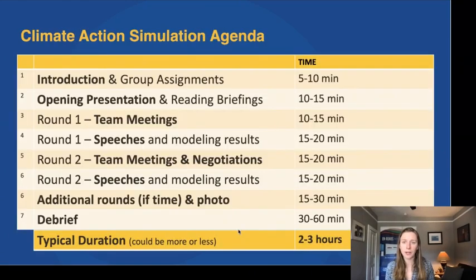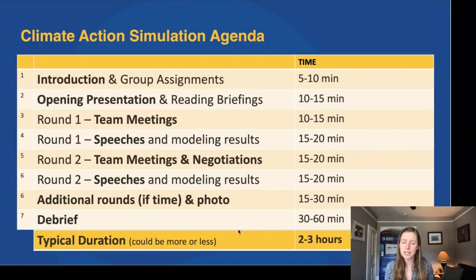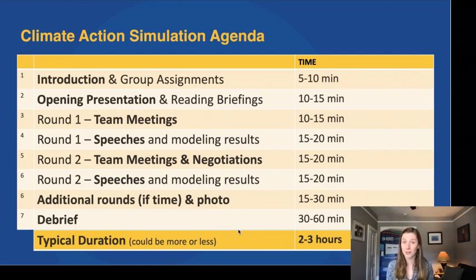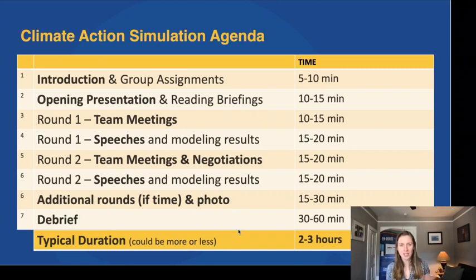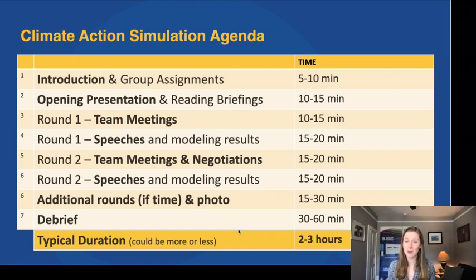Let me give you a quick overview of the agenda for a typical Climate Action Simulation. The event generally runs two to three hours, though there's flexibility — it could go longer or be split into two sessions. The agenda typically starts with an introduction: greetings, giving people their briefing statements describing the roles they'll play. Then someone playing the UN Secretary General gives an opening speech, people have time to understand their roles, and groups break out to discuss their strategy and come up with plans and proposals for what kinds of action they want to take.